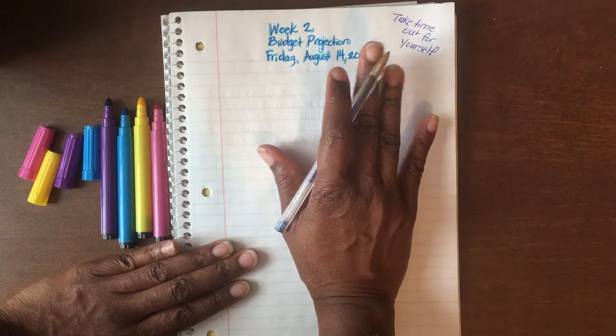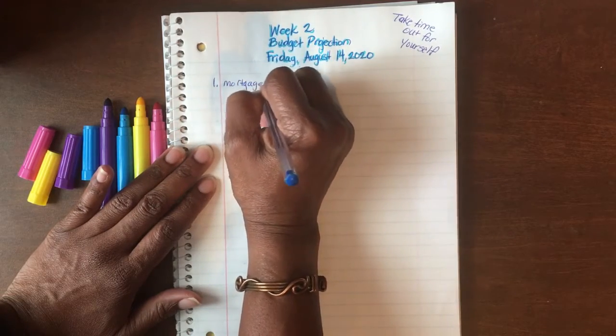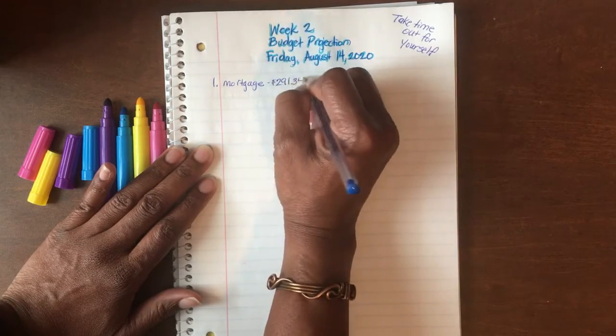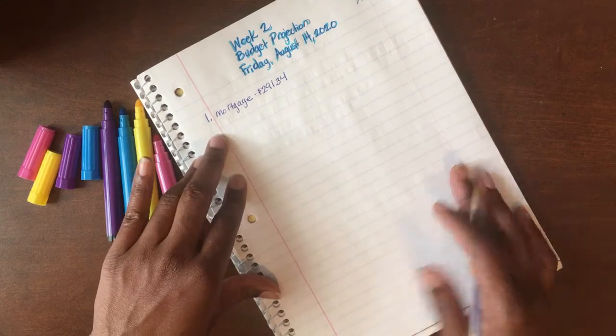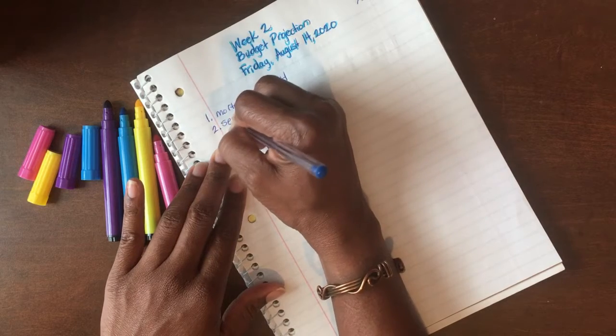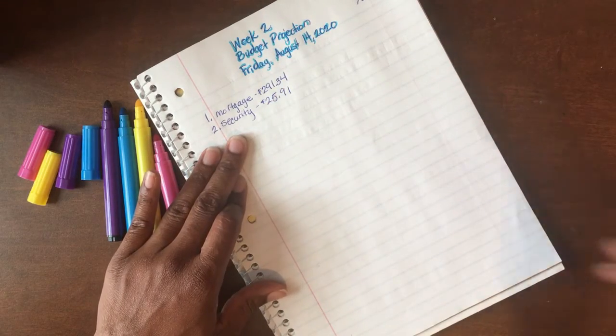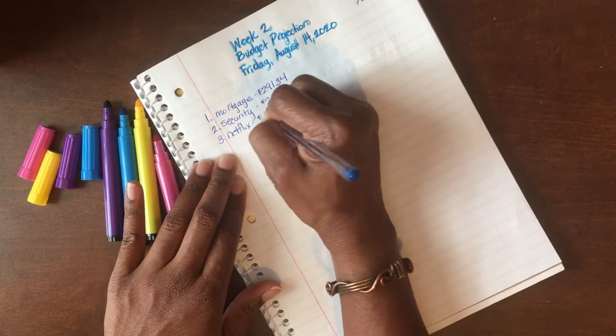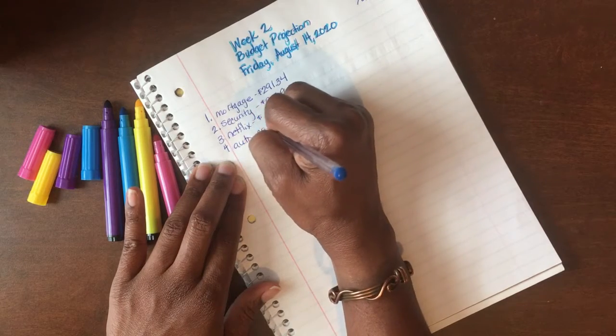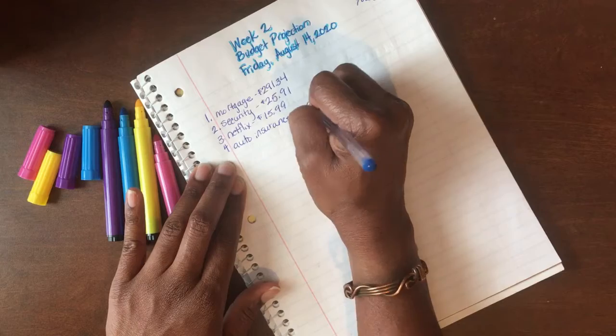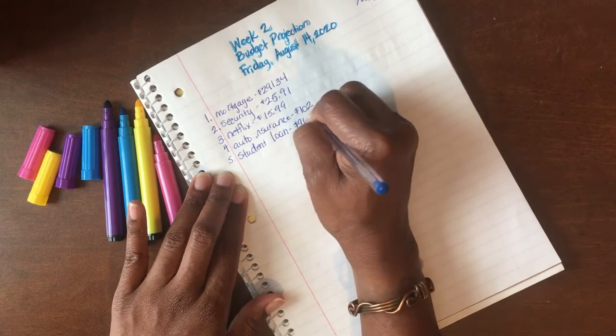Now let's dive right into this budget projection video. First item we have for this upcoming week is the mortgage where I will set aside $291.34. I'm going to have to turn this tablet because I cannot write sideways. Next item is the security for my alarm system, which is $25.94. Next is Netflix, projecting that to come out of this week's pay for $15.99. Next is the auto insurance, which is $102. Next is the student loan payment for $96.75.